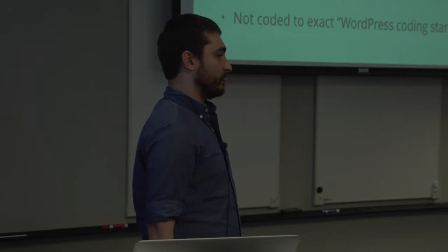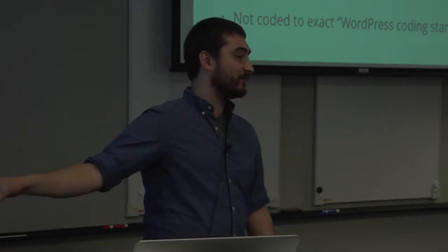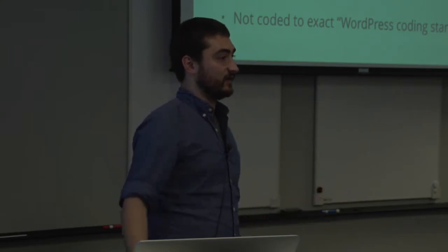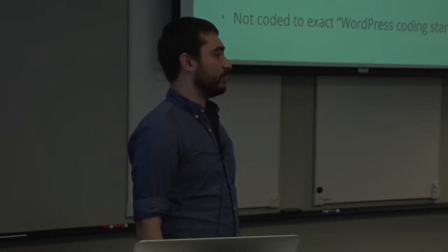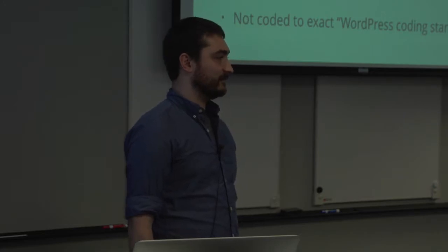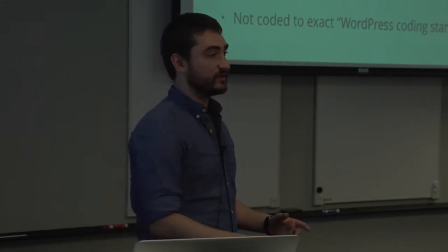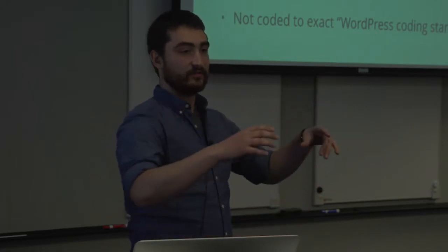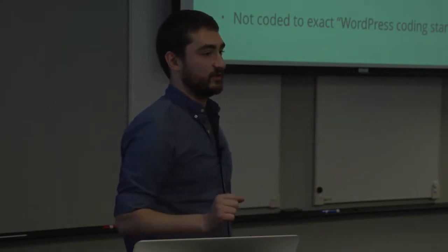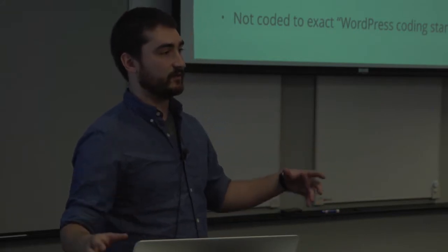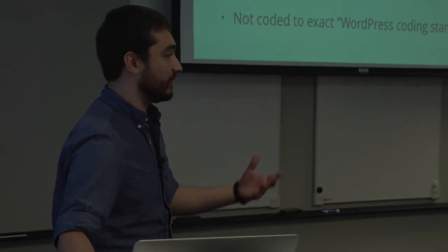You can technically use Sage as a parent theme — UNC Chapel Hill built a new theme based on Roots they're distributing to their multi-site — but if you do, don't ever update it, because the development moves so fast. You'll never see Roots updates in your WordPress dashboard; you have to manually make those changes yourself, though you can make that easier with some Git tools. It's really designed for one-off custom builds — that's what I was doing, and that's what Ben was doing.